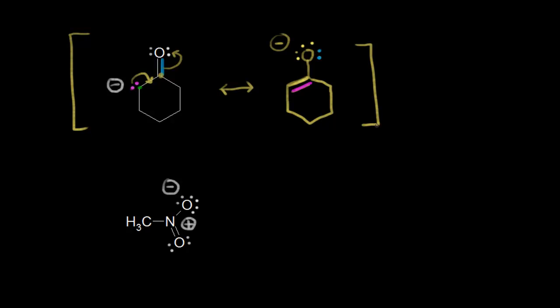Both resonance structures contribute to the overall hybrid. For the structure on the left, we had a negative one formal charge on the carbon in green — that's a carbanion. For the structure on the right, we had a negative one formal charge on the oxygen — that's an oxyanion. Oxygen is more electronegative than carbon, which means it's more likely to support a negative one formal charge. So the resonance structure on the right contributes more to the overall hybrid for the enolate anion.